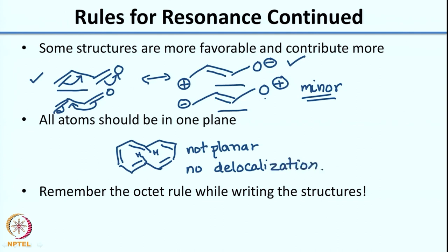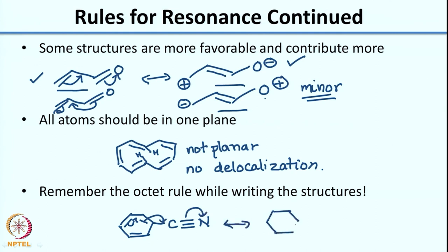Of course, whenever you write resonance structures you must remember the octet rule. For example, if I write a resonance structure by pushing electrons onto nitrogen, I cannot push any more electrons onto nitrogen because that would violate the octet rule. These are the rules for resonance, and as noted, some structures contribute more than others.